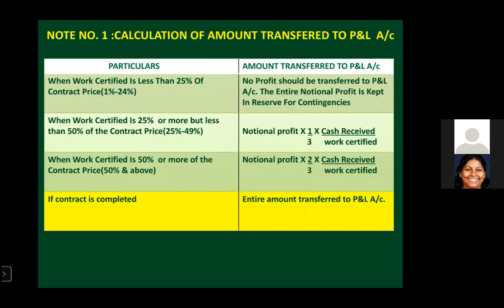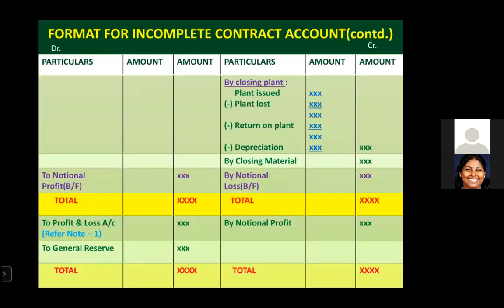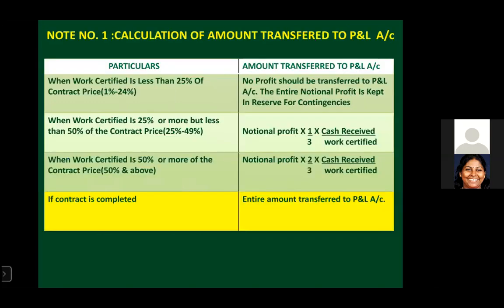Look at the first golden rule. When work certified is less than 25% of the contract price — for example, if notional profit is 10,000 — that entire 10,000 will not go to P&L account. You compare work certified with contract price, always treating contract price as 100%. For example, contract price is 10 lakhs, work certified is 8 lakhs — that is 80% — so the third rule applies.